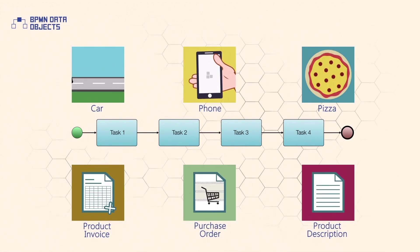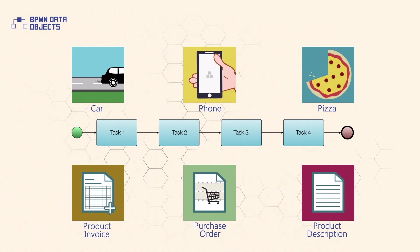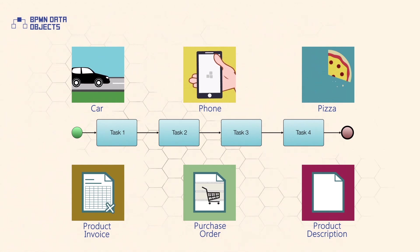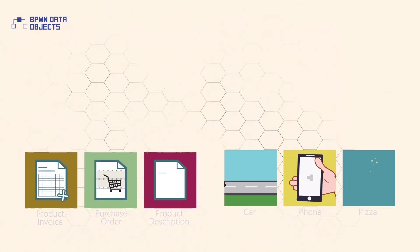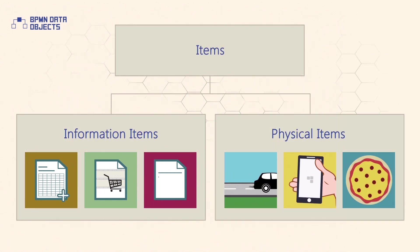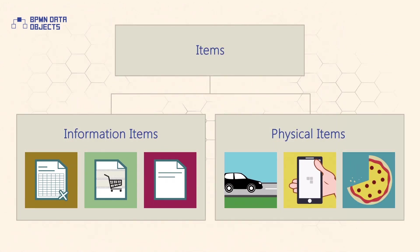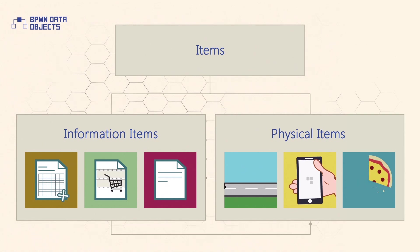This may be a physical item like a car or information such as a product invoice. BPMN offers direct support for modelling information items and the flow of information items, whereas physical items can only be represented indirectly.